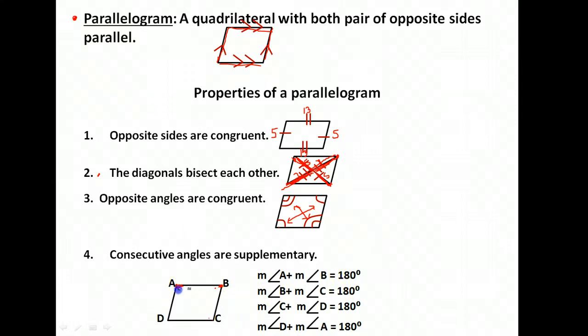So angle A and angle B are consecutive. They would add to be 180. Angles B and C are consecutive. They would add to be 180. Angles C and D are consecutive. They would add to be 180. A and D are consecutive. They would add to be 180. So those are the properties of a parallelogram.